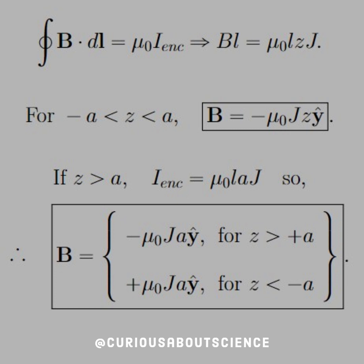Now, if z is outside of the slab, then the enclosed current gives mu-naught times a times j, because we don't have the slab extending out to infinity — we're only at the boundary a. Similarly, we can apply that for underneath, where we go from 0 to negative a, and we get an analogous result just with a instead of z.